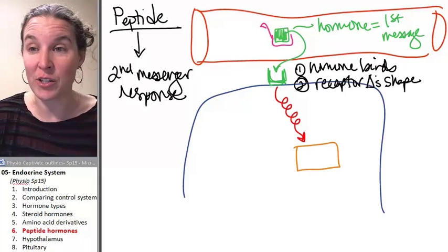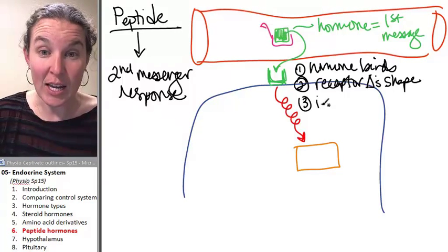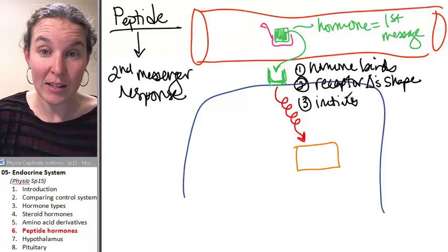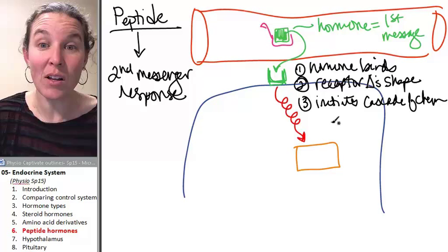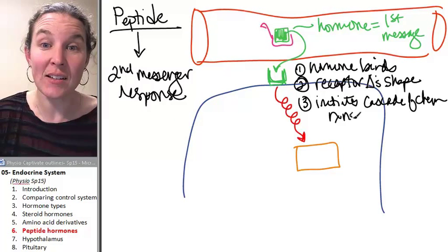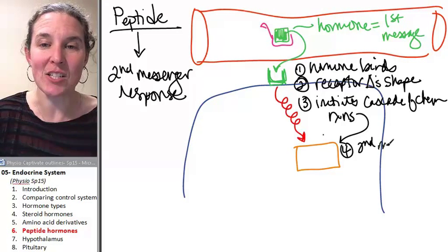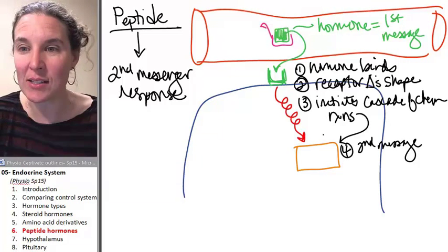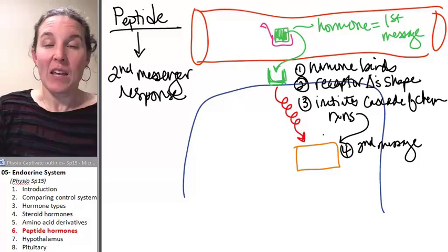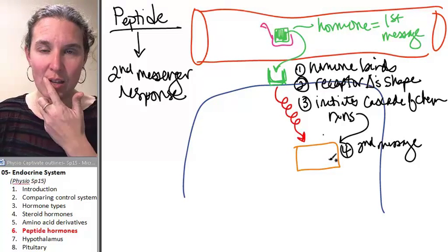And our second messenger, receptor changes shape, receptor changes shape initiates a cascade of chemical reactions to produce my second message. And in most cases, guess who my second message is. If you know me, you know that I pick orange for my favorite high energy things. And this is related to my very favorite high energy thing, which is ATP.